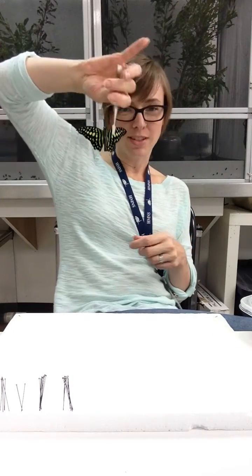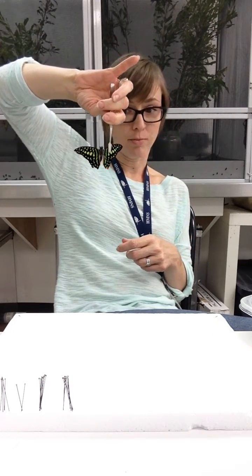You might notice that I'm holding the butterfly with my forceps. That's because the butterfly's wings are covered in millions of tiny microscopic scales, which give it its beautiful colors and patterns. If I were to touch it with my fingers or some sort of rough surface, it would rub off those scales, making it not as beautiful. If you don't have the forceps, no big deal. Just handle it very carefully and try to touch the wings as little as possible.